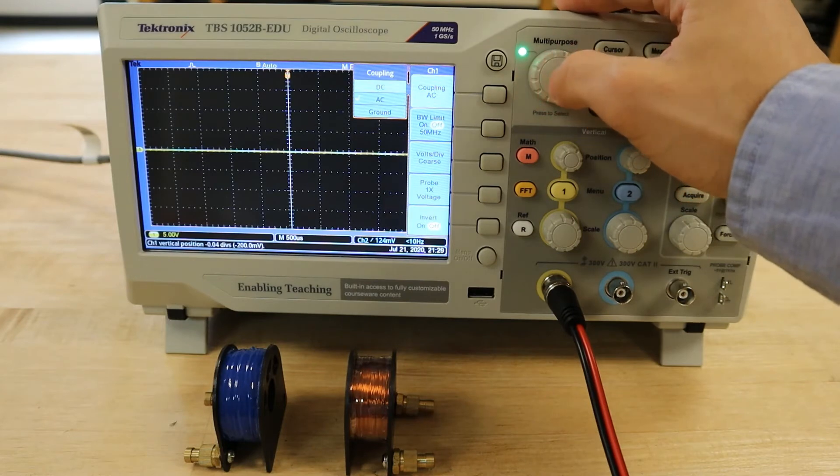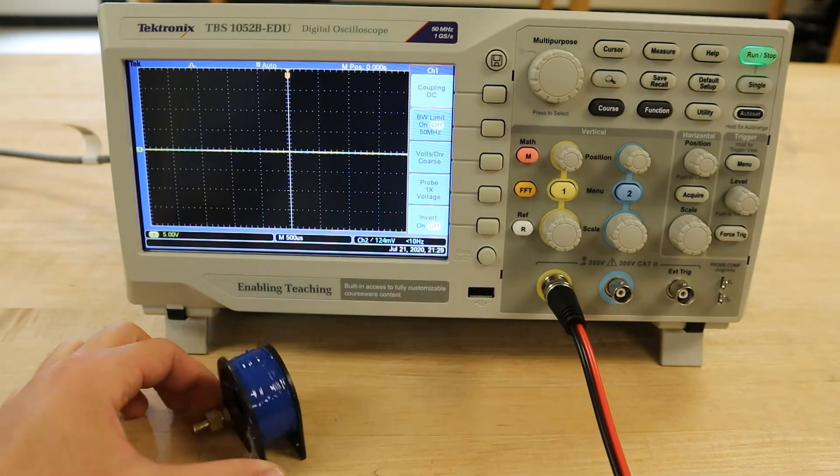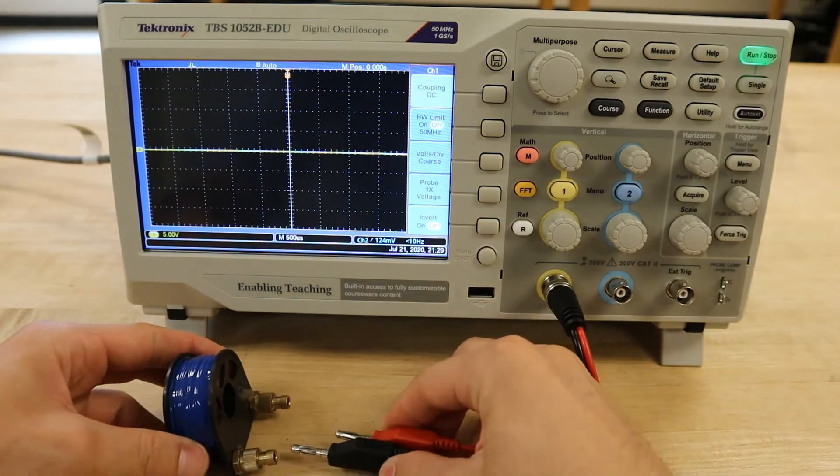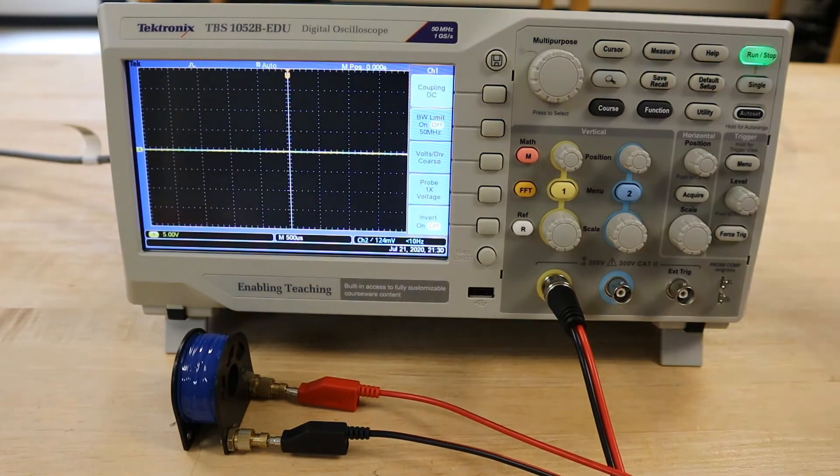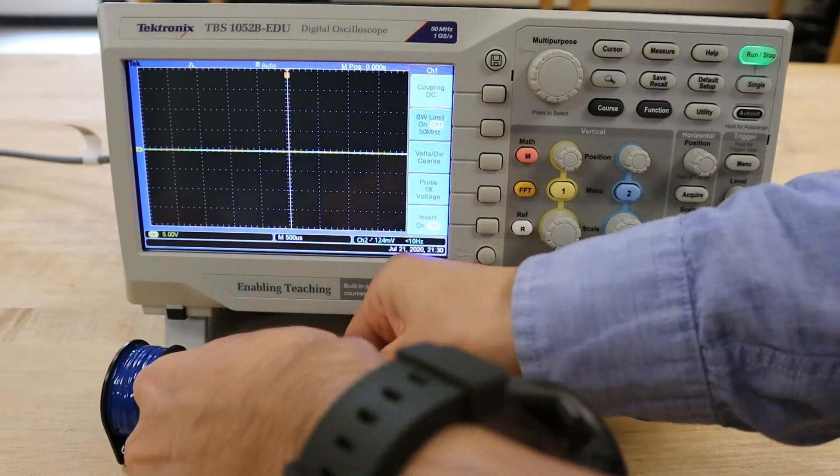We will set the coupling to DC and then connect the ghillie coil that we did not use in the previous procedure to the oscilloscope using the banana probe cables. We will also connect this ghillie coil to the function generator using banana cables.